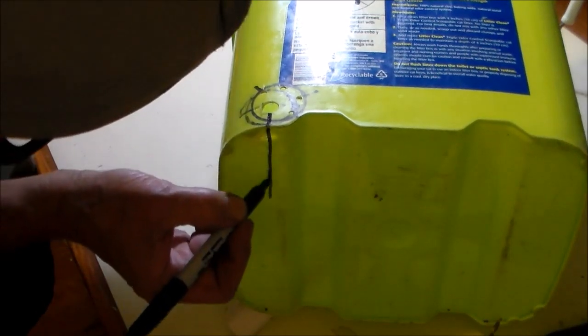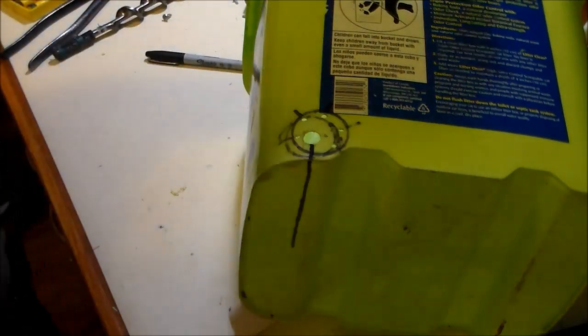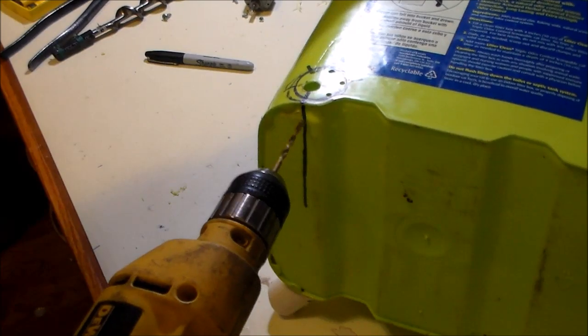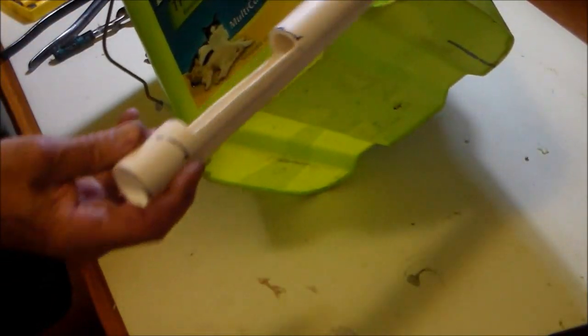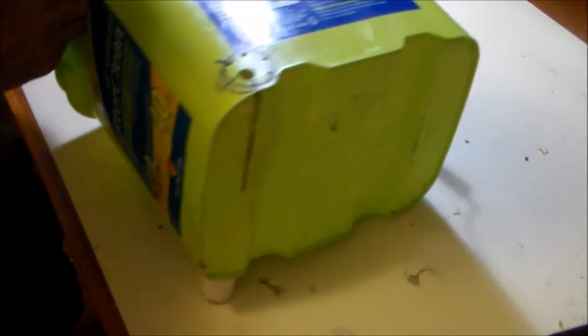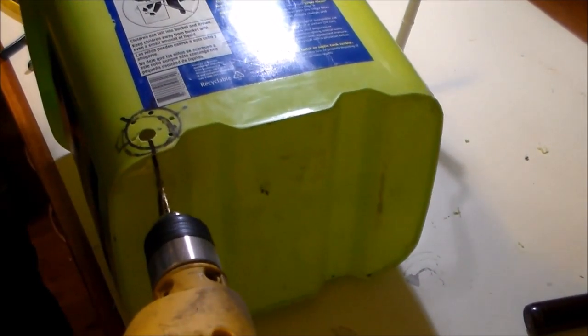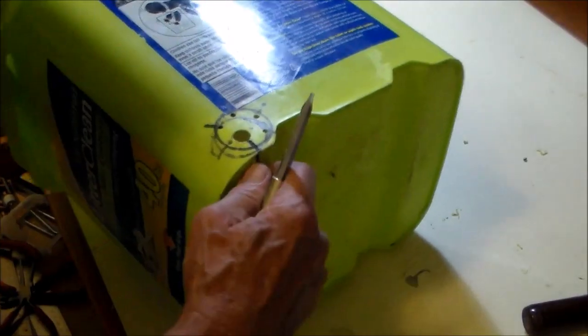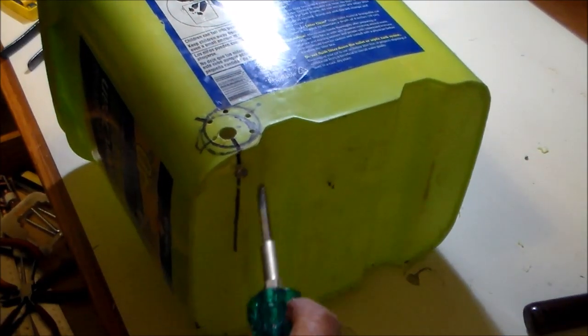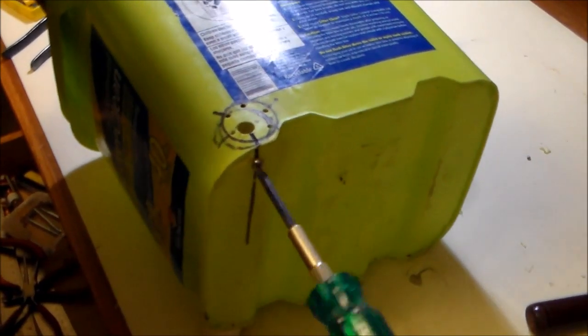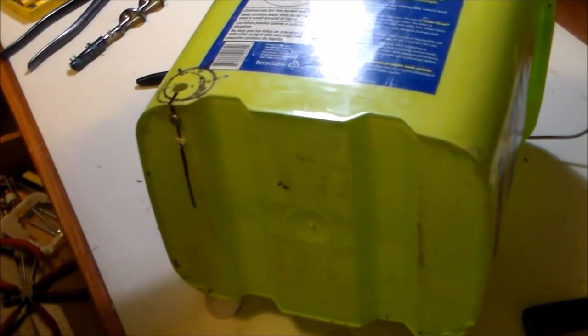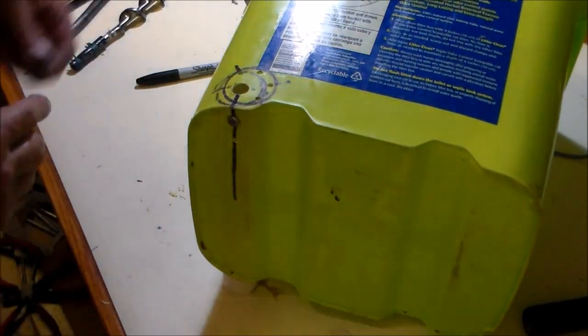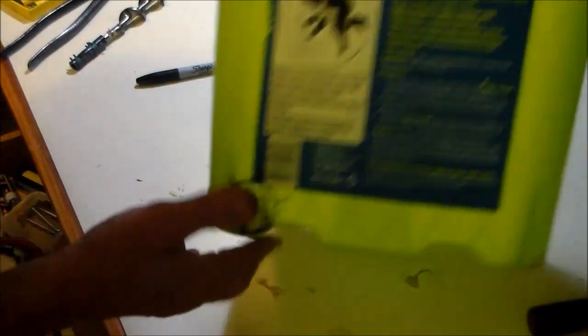During assembly the auger tube will be held into position with two pan head screws. These are sheet metal screws that will be attached from the underside of the bucket. This is where I'm drilling the pilot holes for those screws. Then I'm going to attach that into the auger tube from the underside. The auger tube now is having its pilot holes bored.